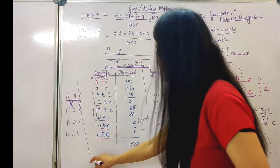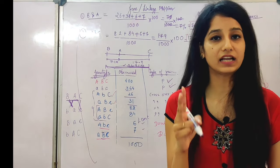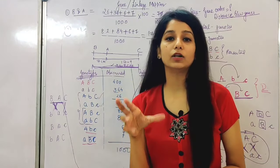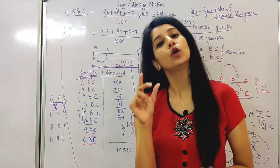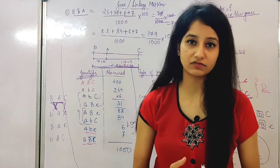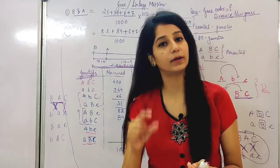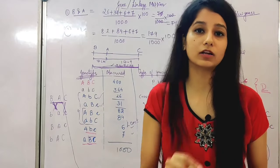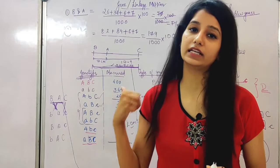To summarize the approach: first find parental gametes and double crossover gametes, then compare them to determine gene order — the middle gene always changes in double crossover. Then find the distance between genes using single crossover gametes plus double crossover gametes in the formula.